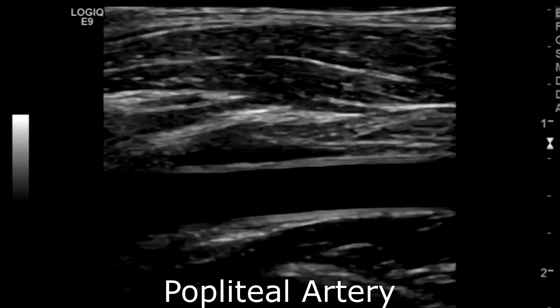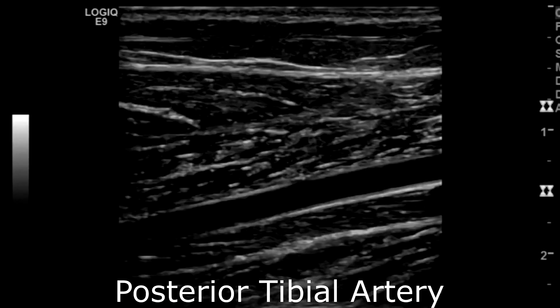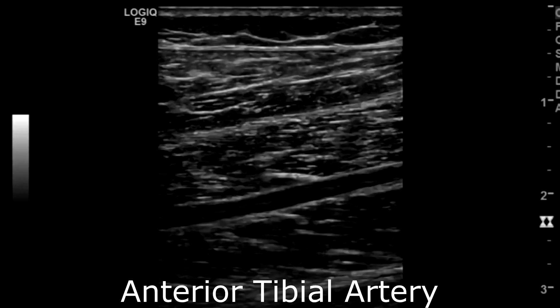Then behind the knee is the popliteal artery. Then scanning the medial calf, you have the posterior tibial artery. And laterally, you have the anterior tibial artery.